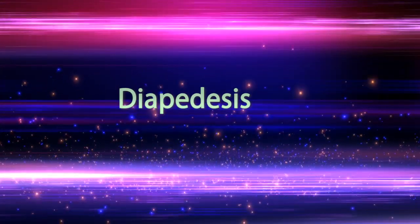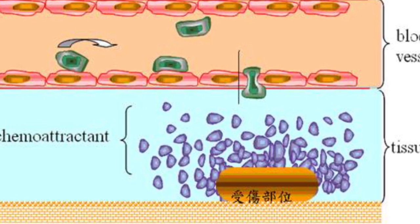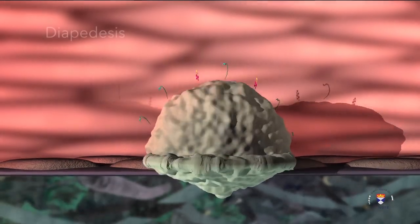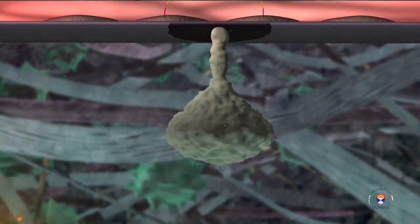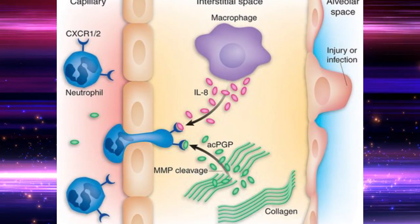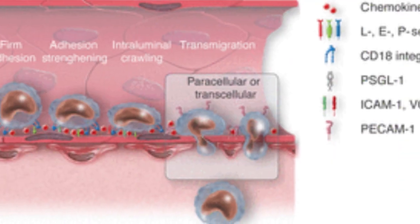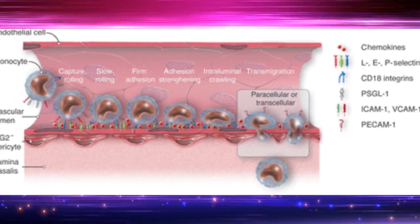Transmigration or diapedesis: Transmigration means leukocytes migrate through endothelium, through gaps between endothelial cells. Migration of leukocytes is driven by chemokines produced in extravascular tissues, which stimulate movement of the leukocytes toward their chemical gradient. After passing through the endothelium, leukocytes secrete collagenases that enable them to pass through the vascular basement membrane.